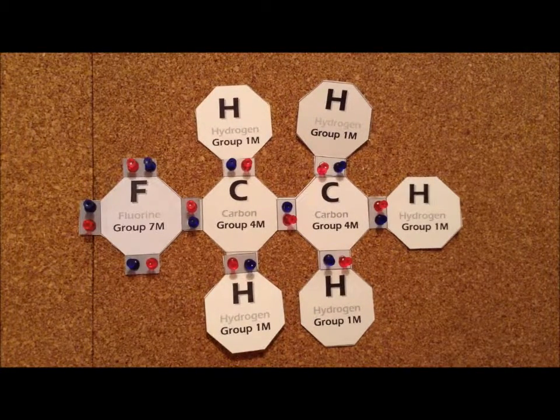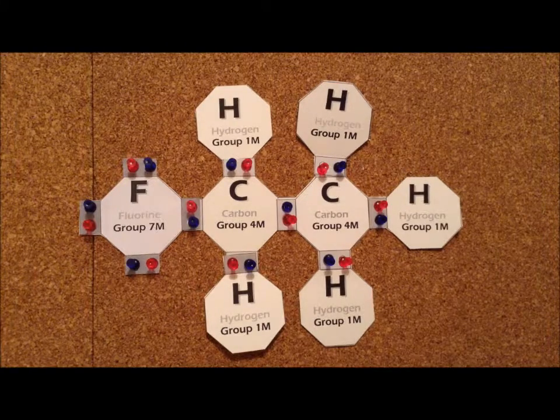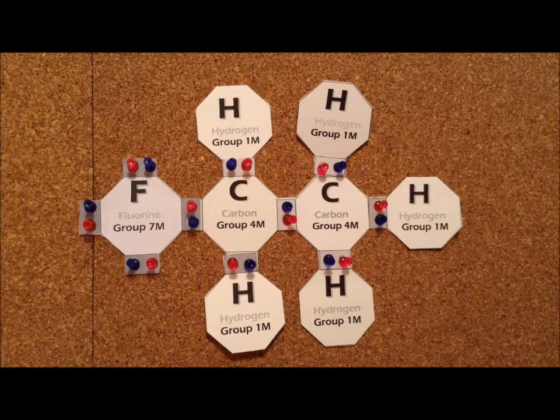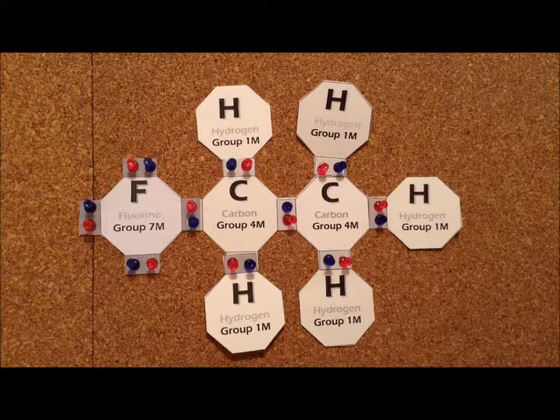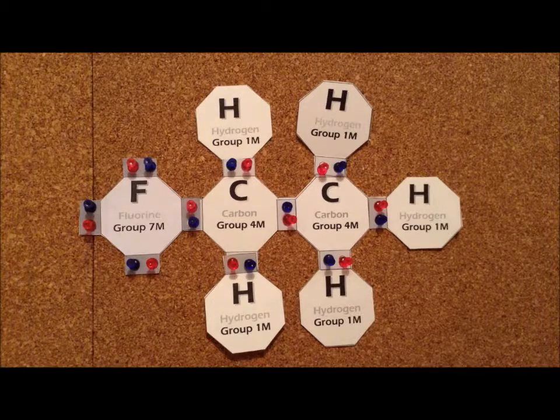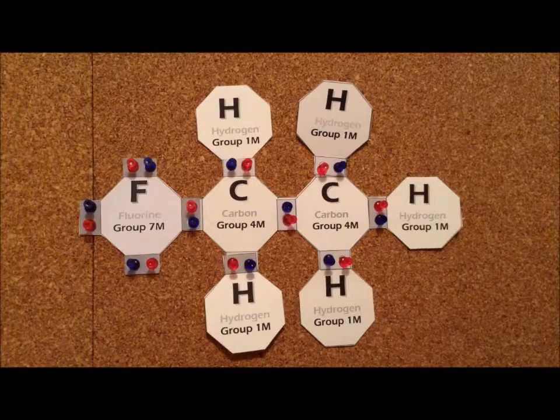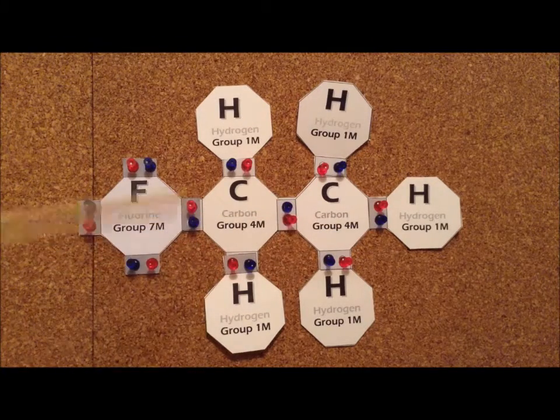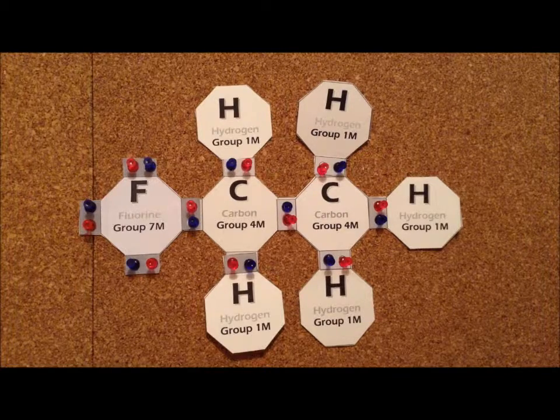If we replace one of the hydrogen atoms of ethane with a fluorine atom, we end up with a compound ethyl fluoride. In this particular compound, we have a total of 20 electrons. And we can satisfy the duet and octet rules by single bonds amongst all the elements in this particular compound.